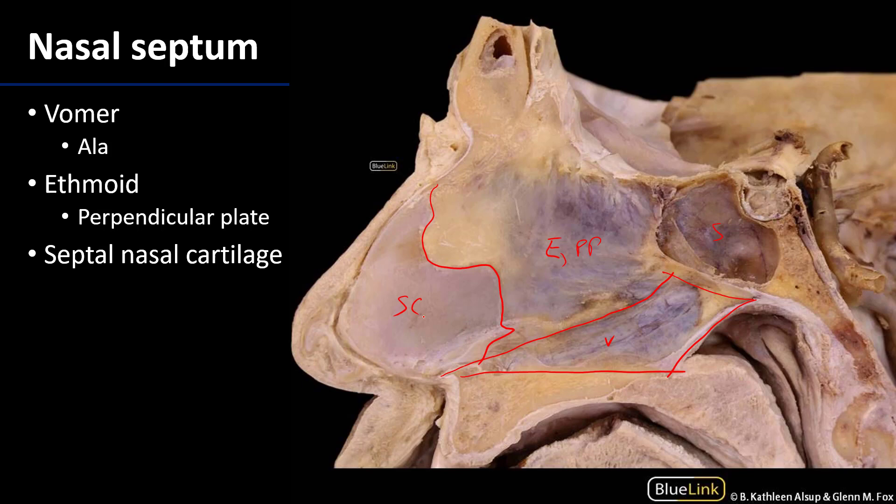That septal cartilage is going to be in the anterior portion of the nasal cavity, and it is going to be the only portion within the vestibule of the nose.